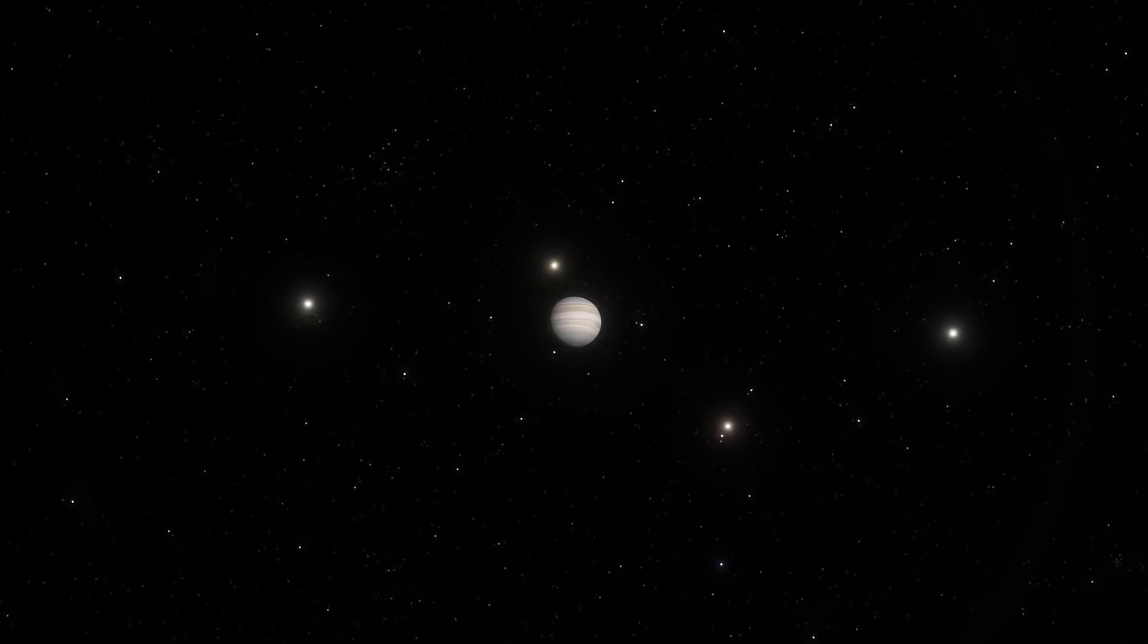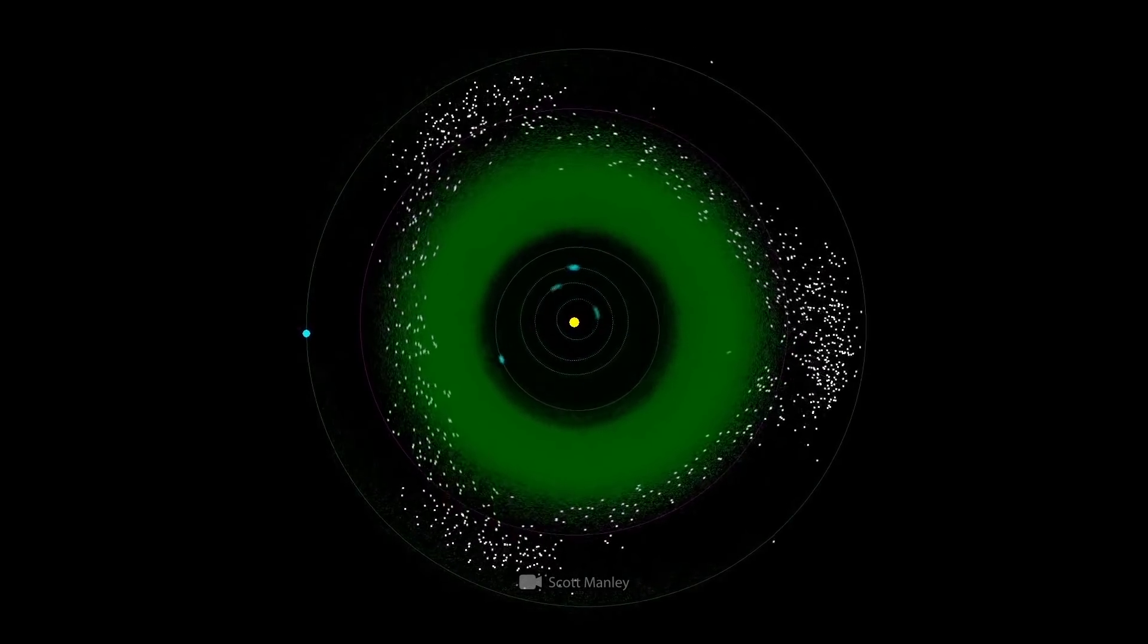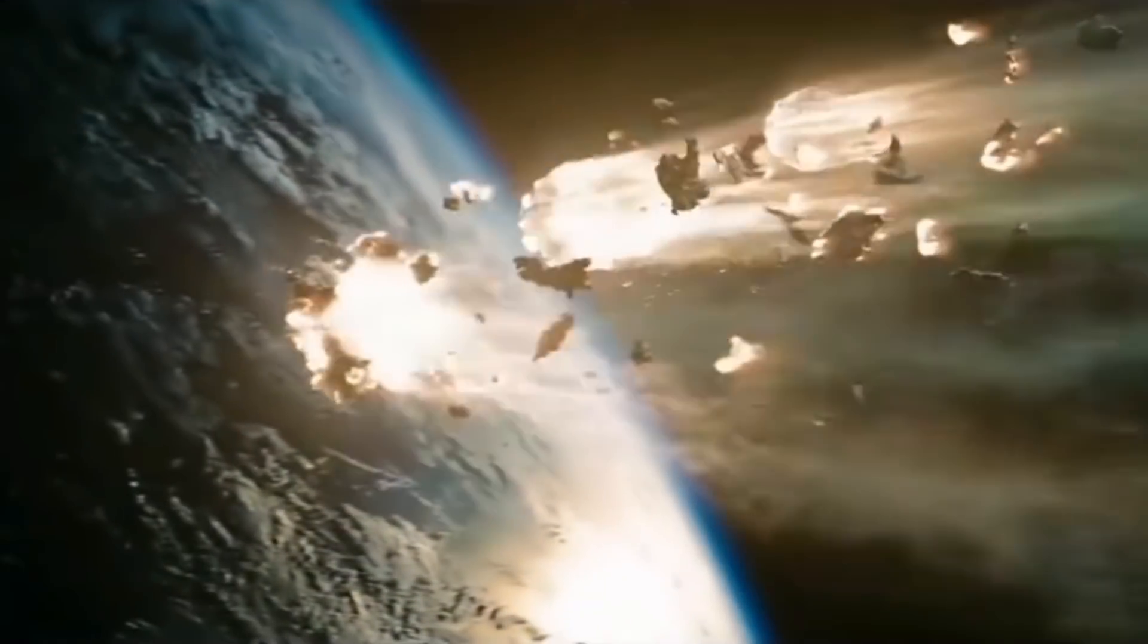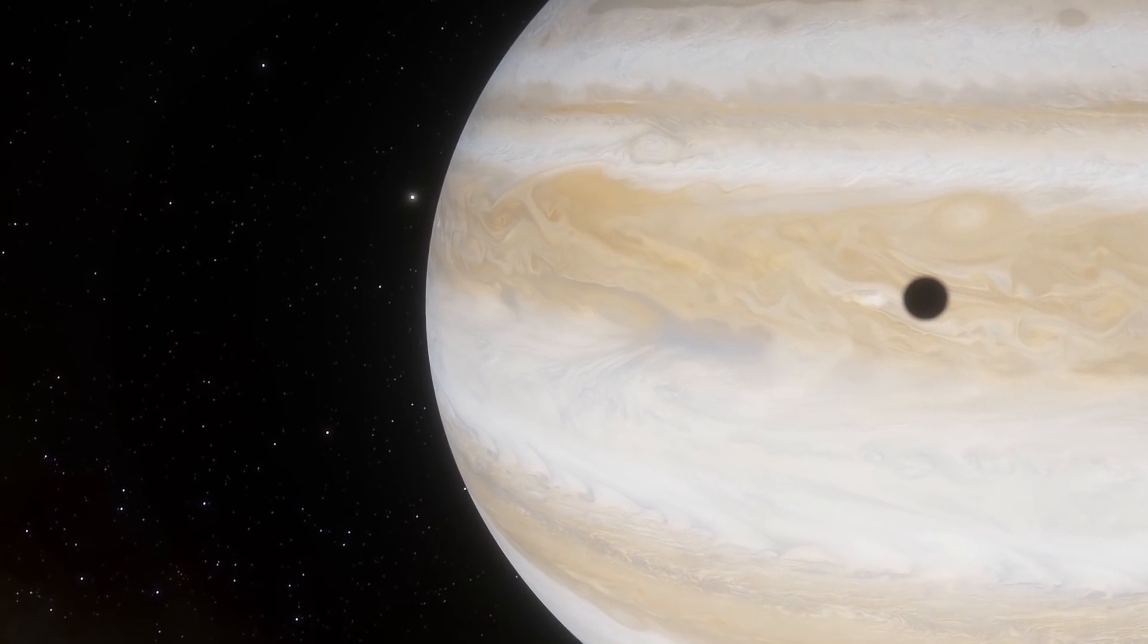Jupiter can change the trajectory of tons of stuff—comets, asteroids, and various other space objects—thus protecting the Earth from collision. As we can see, Jupiter can be our friend and protector.